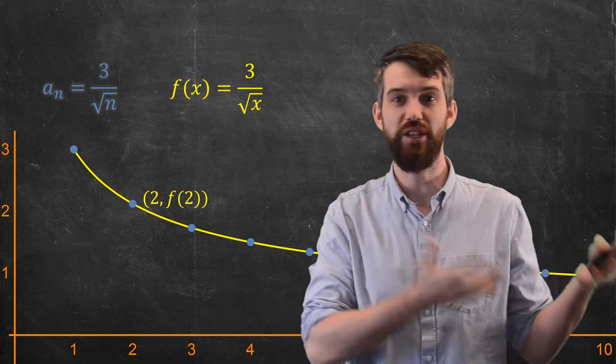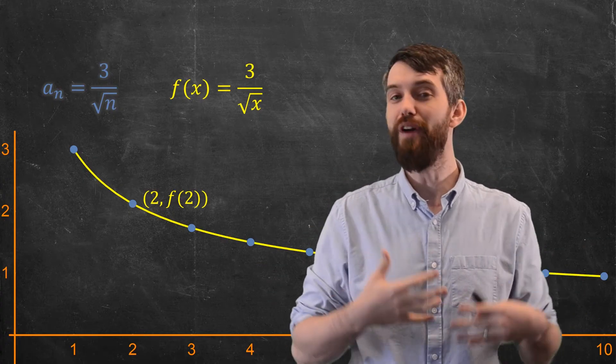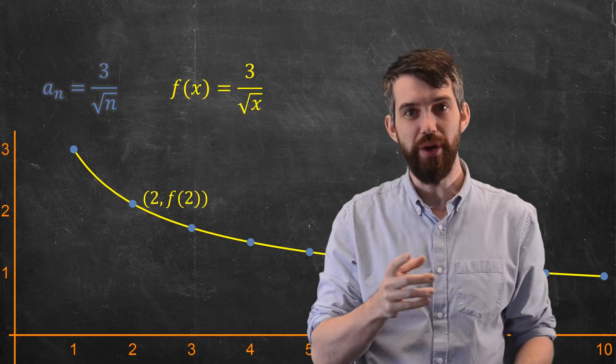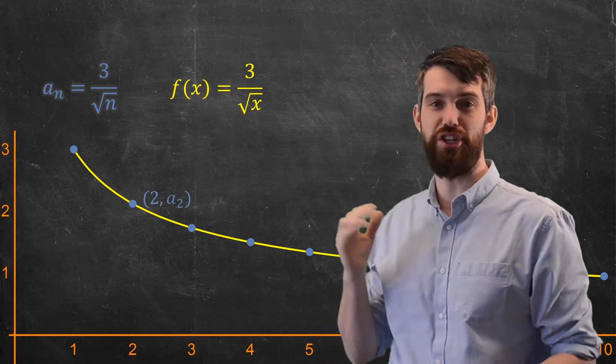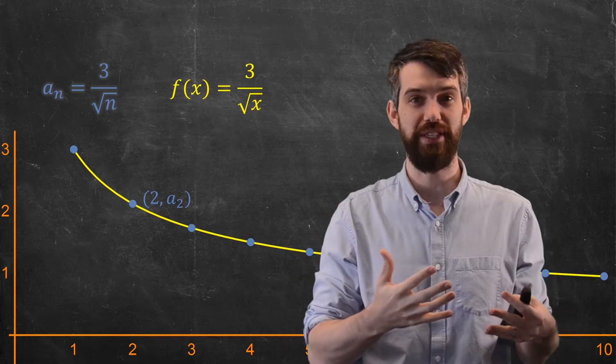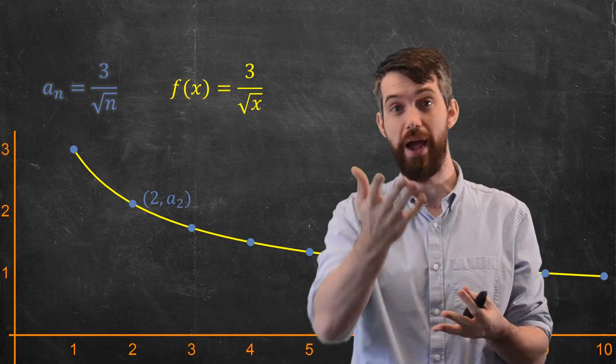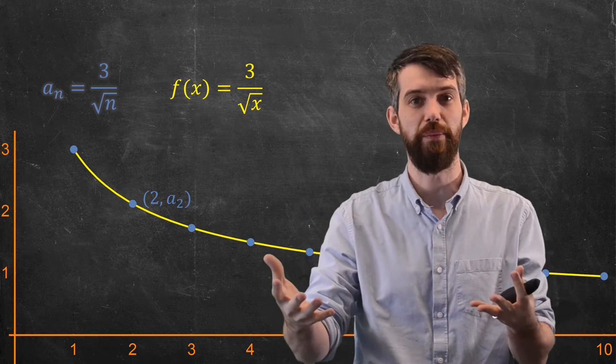And that would tell me the x and y coordinates for a particular point in my graph. But if I'm talking about it through a sequence, instead of (2, f(2)), it's (2, a₂). The second term of the sequence gives me the height of a particular point, and the x-coordinate is given just by the 1, the 2, the 3, the value of n in general.